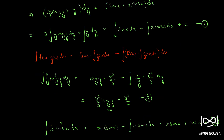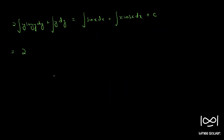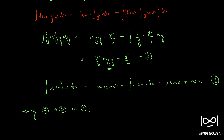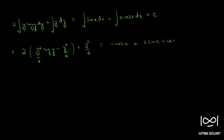Plugging all the values in: 2 times (y²/2 · log y − y²/4) plus y²/2 equals −cos x plus x sin x + cos x + c. Taking 2 inside gives y² log y − y²/2, and we have +y²/2, so those cancel. Also −cos x and +cos x cancel. This simplifies to: y² log y = x sin x + c. This is the solution to the first part.